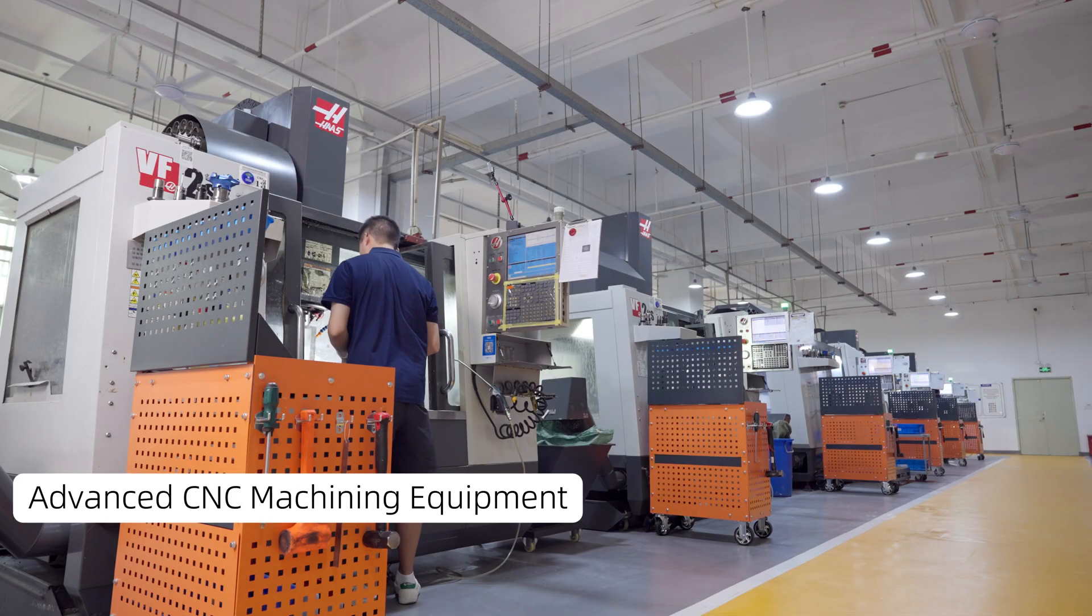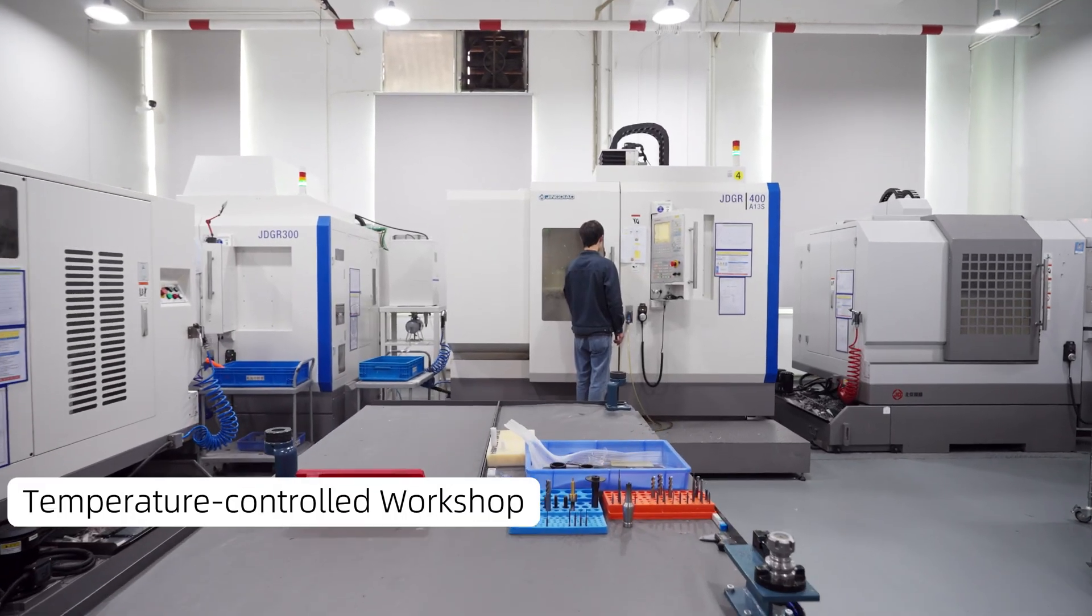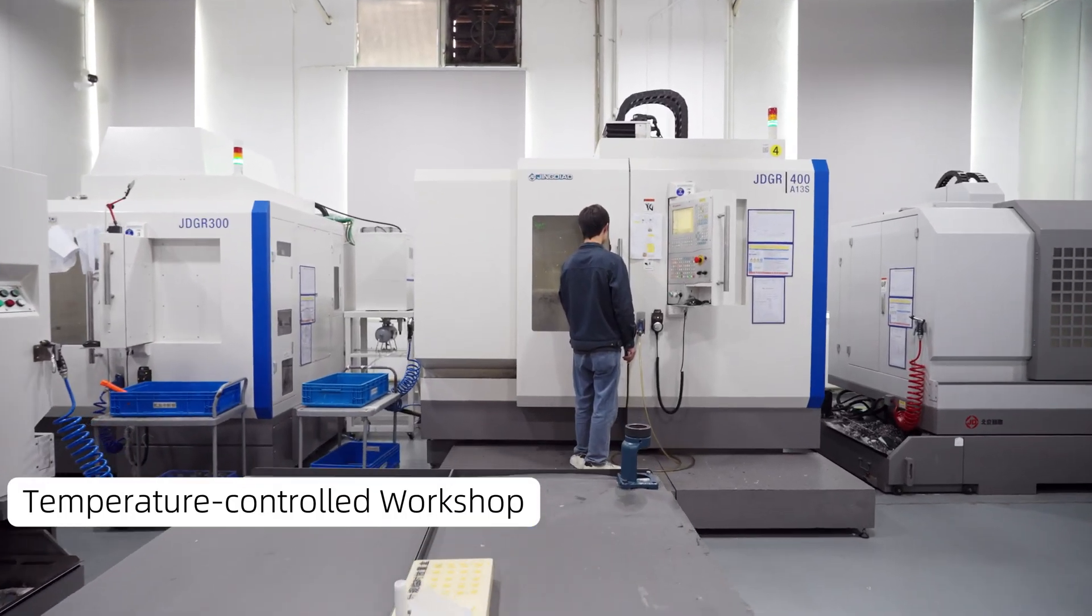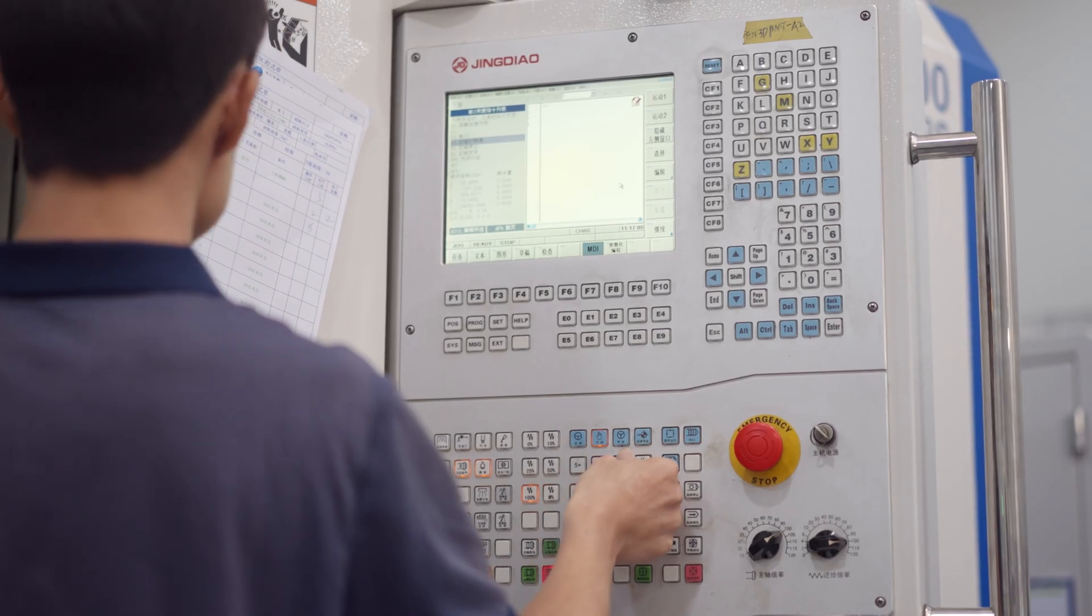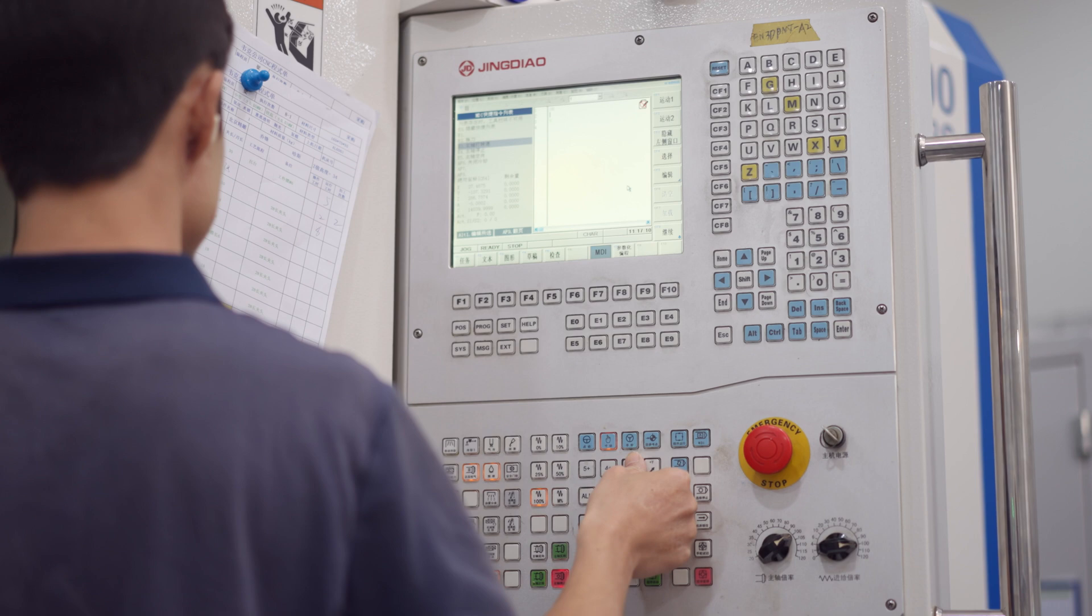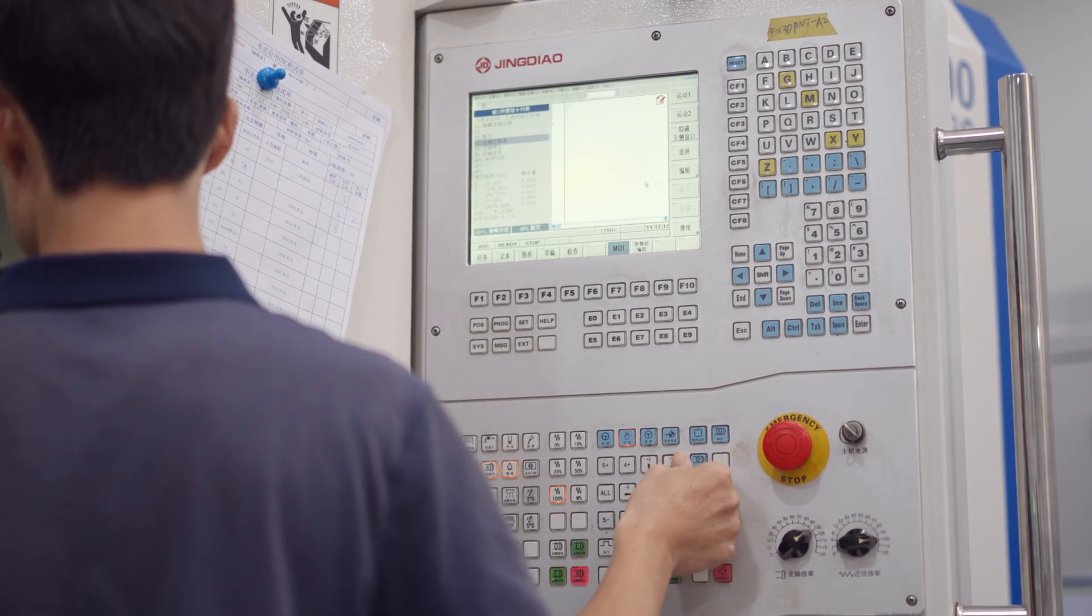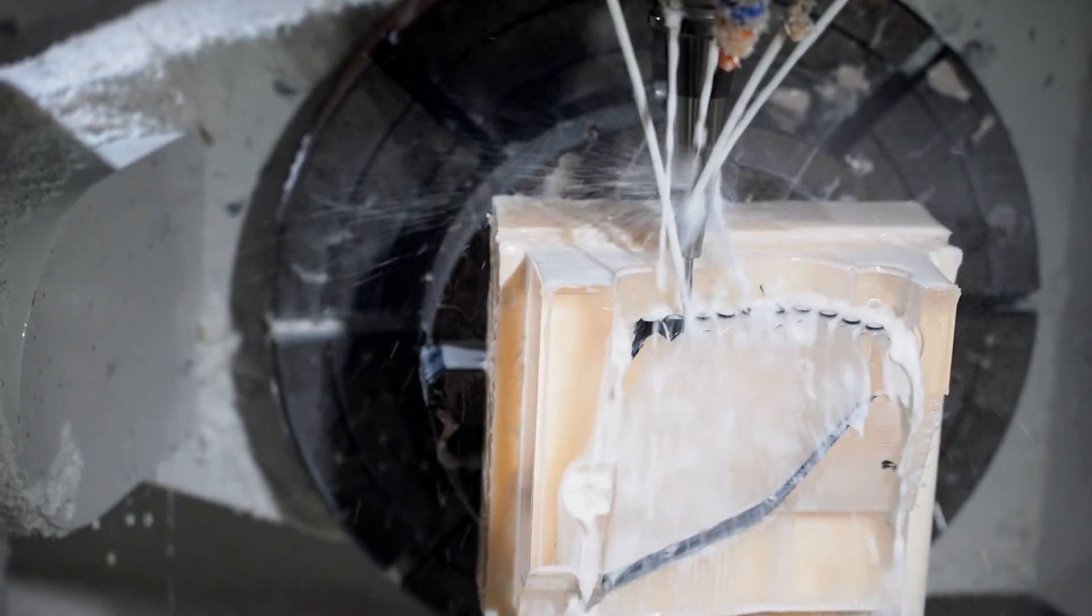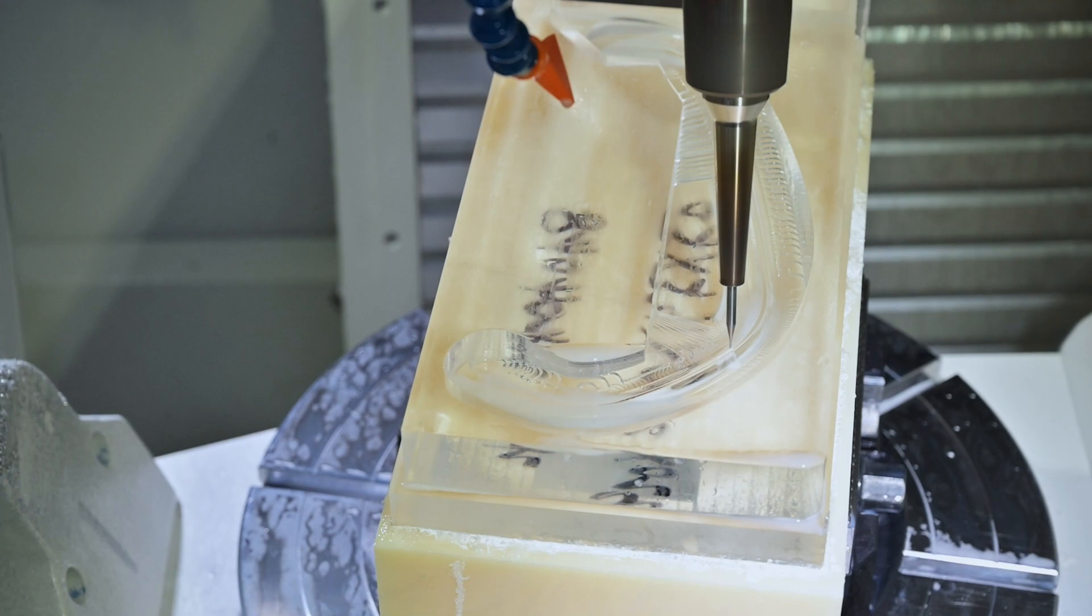Waken is equipped with advanced CNC machining equipment and has a dedicated temperature-controlled 5-axis workshop to ensure consistent machining precision. Our machining capabilities go beyond traditional processes, enabling the efficient production of complex precision parts with higher dimensional accuracy and superior surface quality.